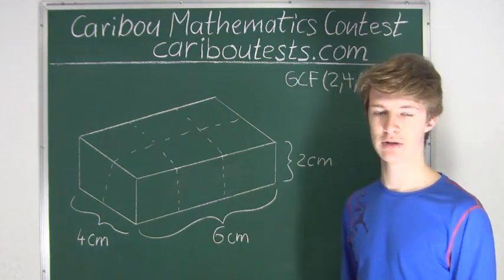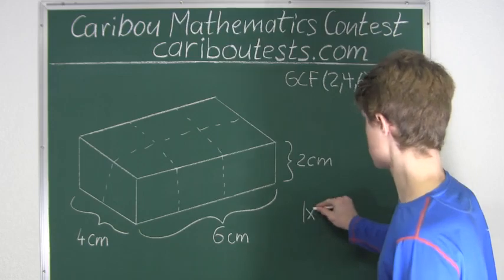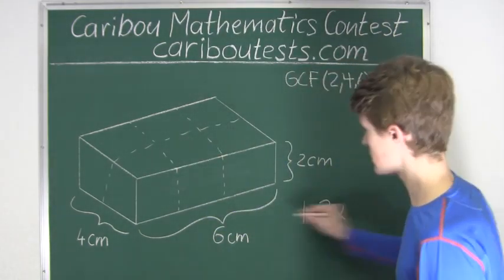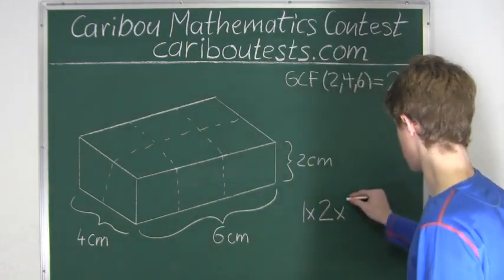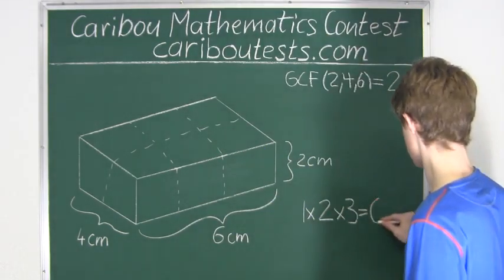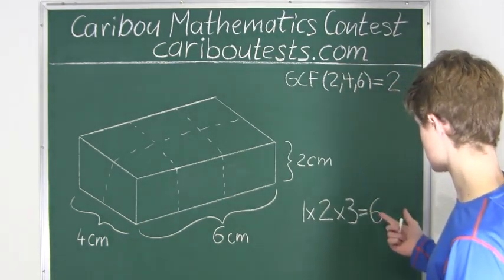The number of cubes that he can obtain is just 1 times 2 times 3, and that is equal to 6. So the smallest number of cubes that he can obtain is 6.